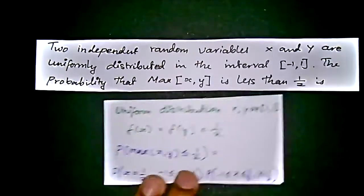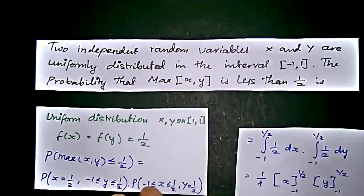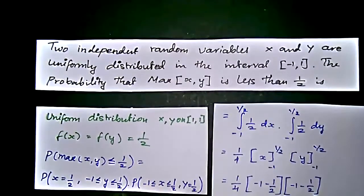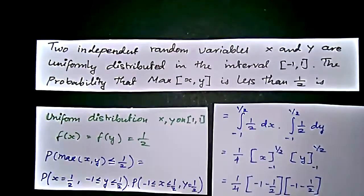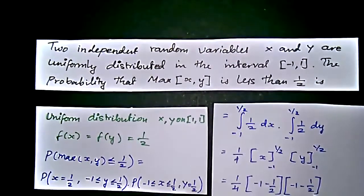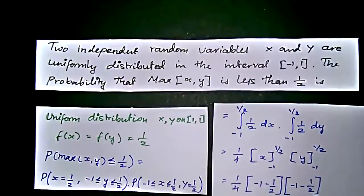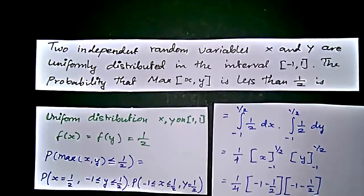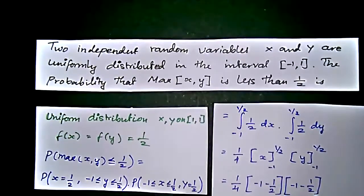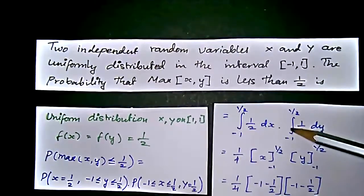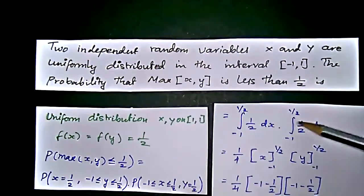How can the probability get the values like x equal to 1 by 2 and so on. For that, we should apply the integral formation. It is given in the uniform distribution. If you have any doubts in the uniform distribution, please check the description below. We will get 1 by 2 dx multiple of 1 by 2 dy.